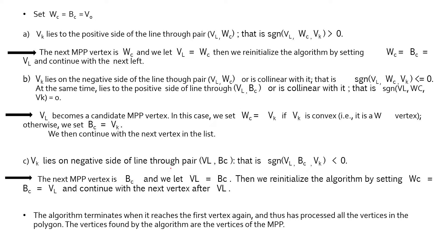Condition C: if VK lies on the negative side of the line through the pair VL and BC — that is, sign(VL, BC, VK) < 0 — then the next vertex will be BC, we let VL equal BC, reinitialize the algorithm by setting WC equals BC equals VL, and continue with the next vertex after VL. The algorithm terminates when it reaches the first vertex again, having processed all the vertices in the polygon. The vertices formed by the algorithm — the VLs obtained — are the vertices of the MPP. This is how we compute the minimum perimeter polygon.